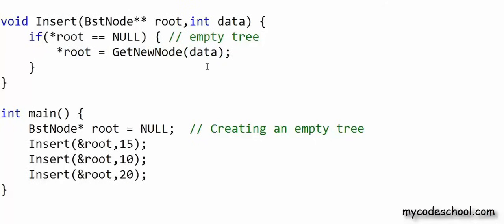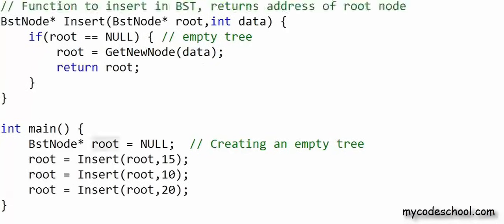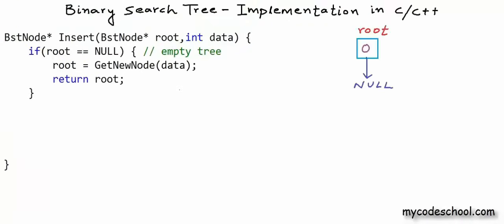Actually, there is another way — instead of declaring root as a local variable in main, we can declare root as a global variable. A global variable has to be declared outside all functions. If root were a global variable, it would be accessible to all functions and we would not have to pass its address as an argument. Anyway, coming back to the logic for insertion: if the tree is empty, we simply create a new node and set it as root.